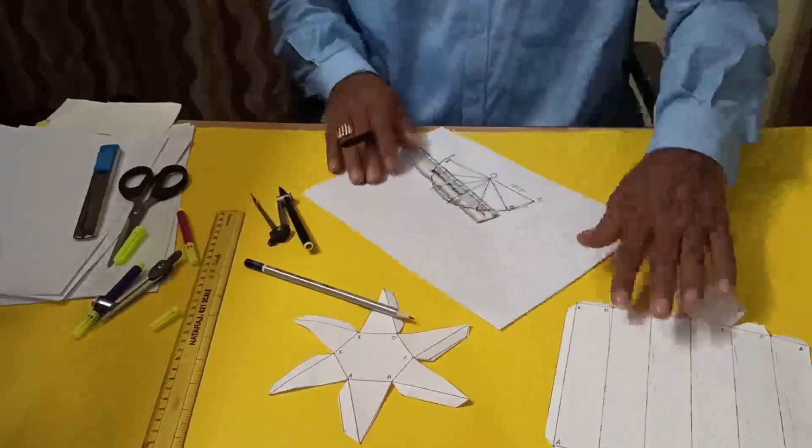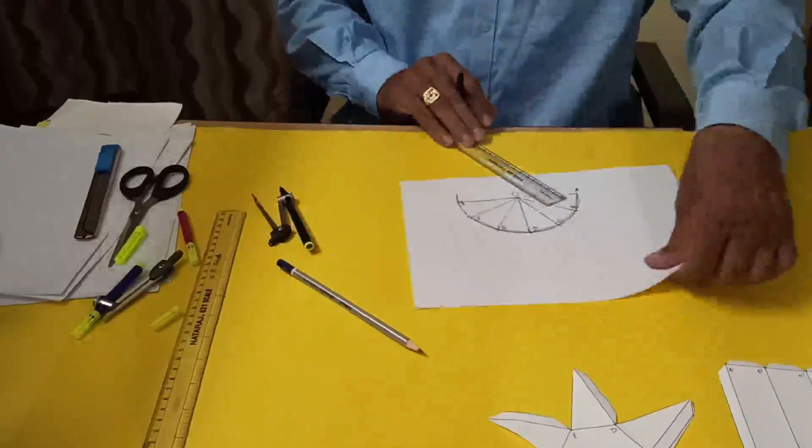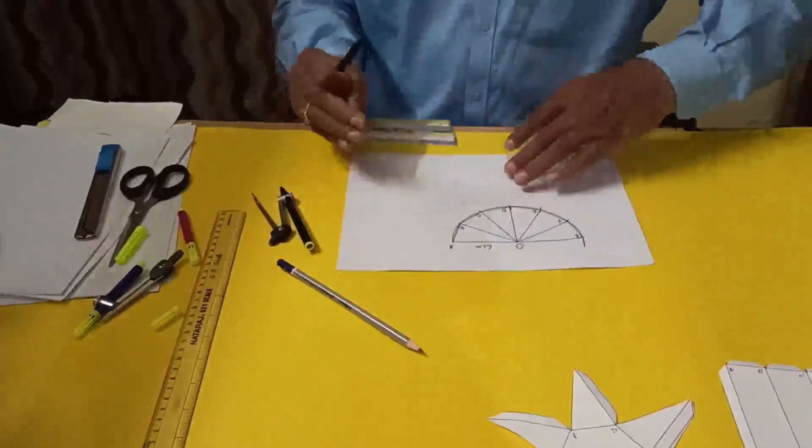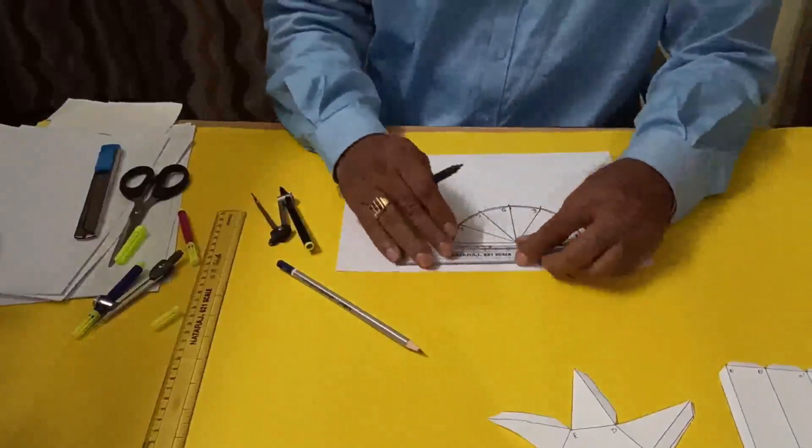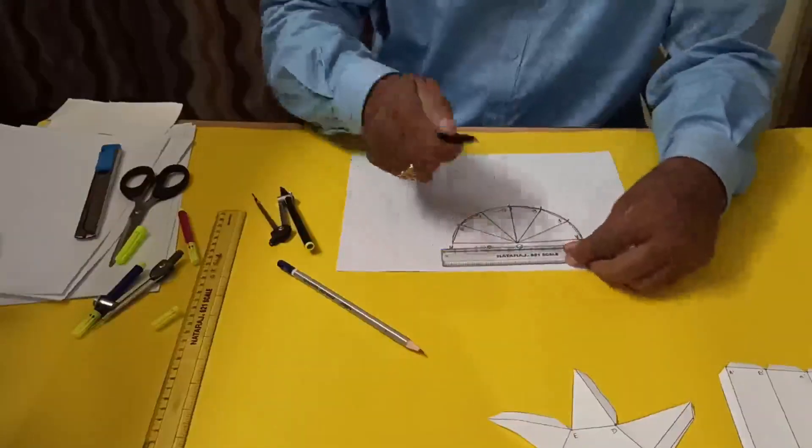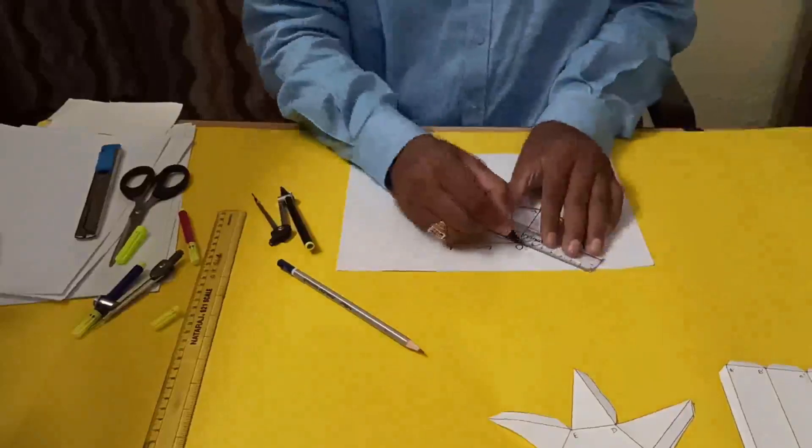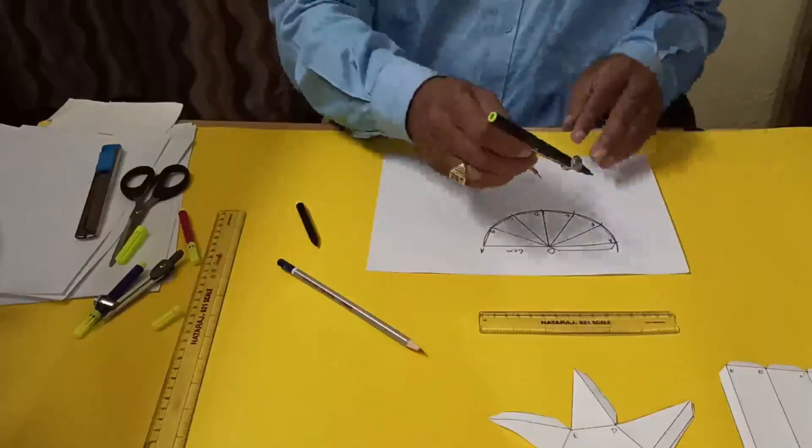Now for the border, see as point A and A are the same, you have to draw here the border - this semi-circular border.